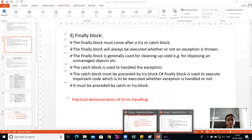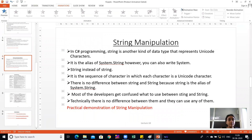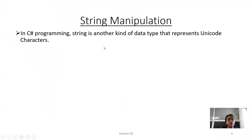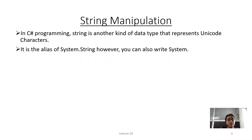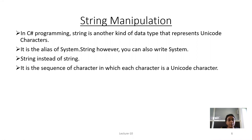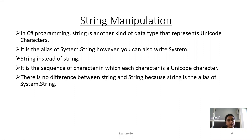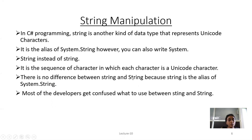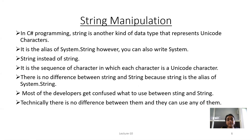Next topic is String Manipulation. In C-Sharp programming, a string is a data type that represents Unicode characters. It is the alias of System.String — you can also write System.String instead of string. It is a sequence of characters where each character is a Unicode character. There is no difference between string and String because string is an alias of System.String. Capital S indicates the class and lowercase s indicates the data type, but there is no functional difference between them.